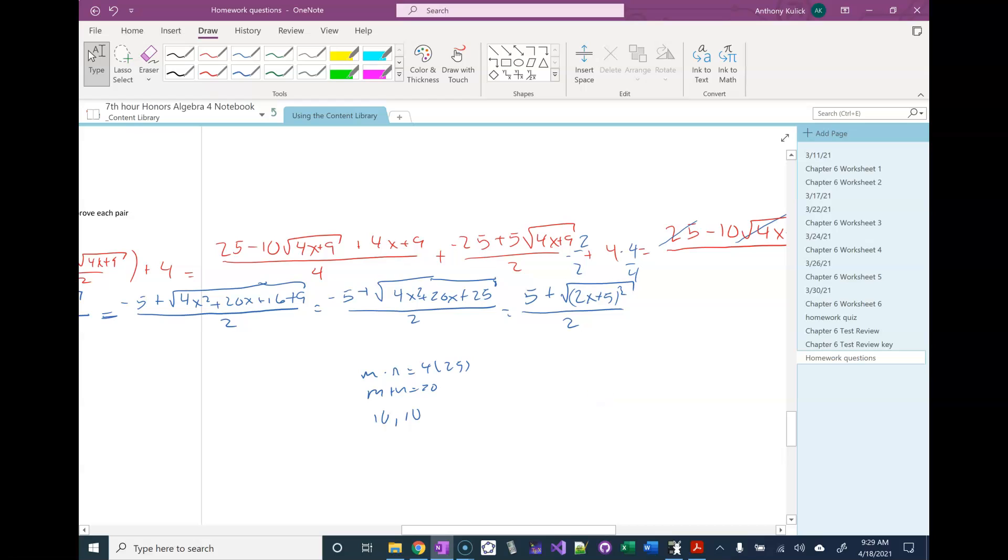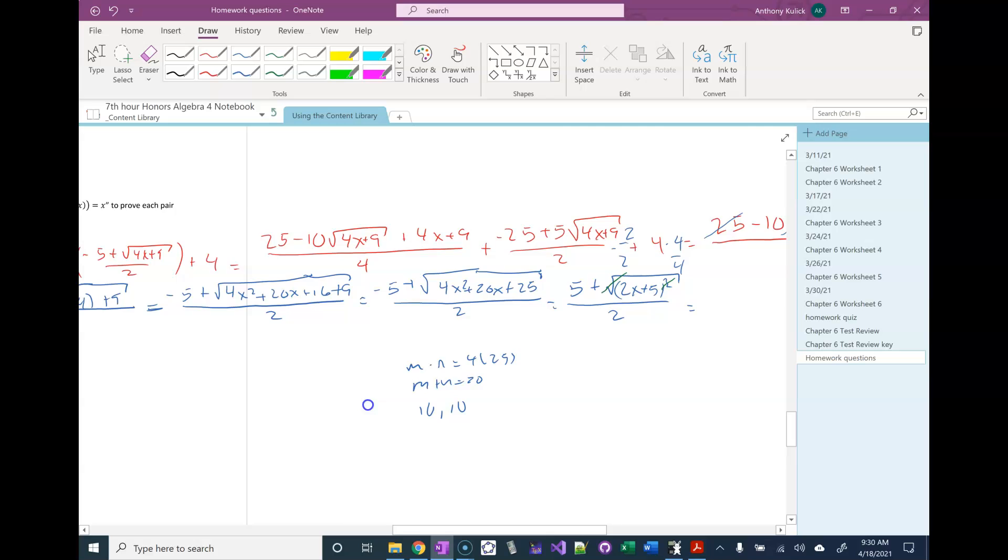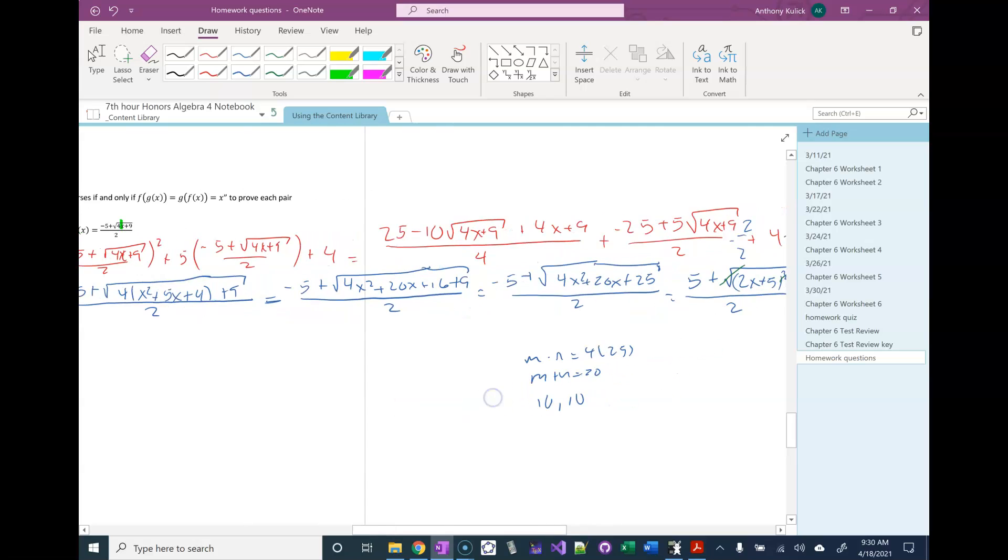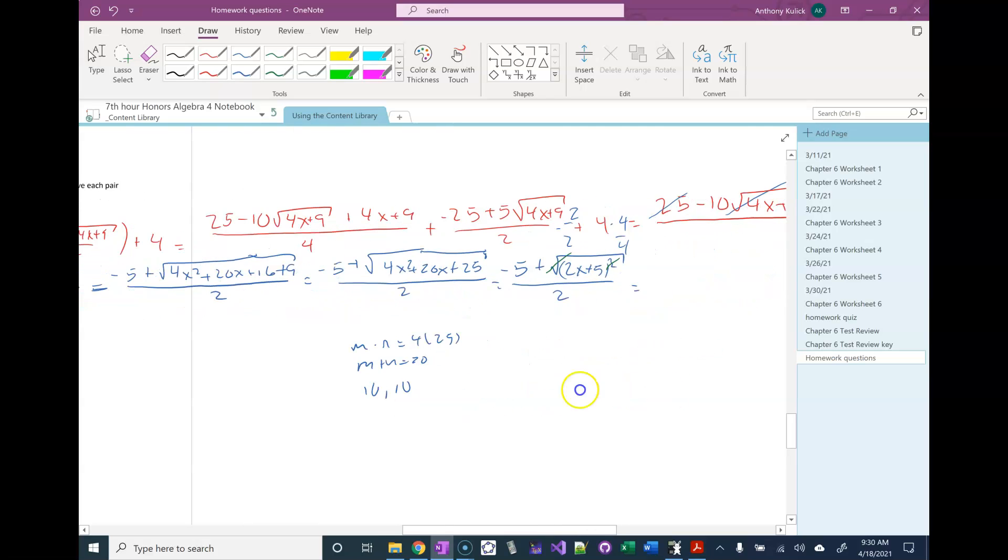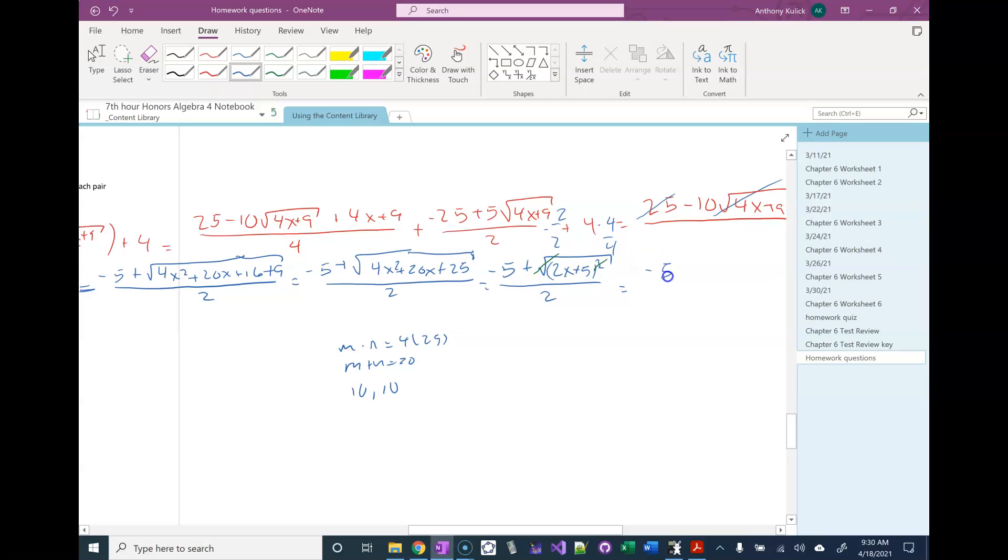So the square root is going to cancel the squared, and we're left with... Oh, that's a negative 5. Okay. Negative 5 plus 2x plus 5 over 2.